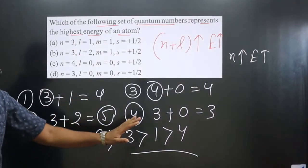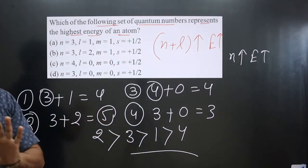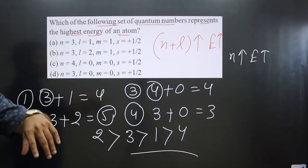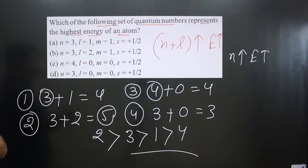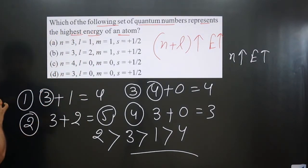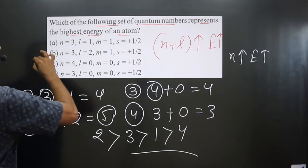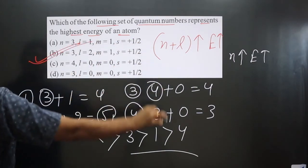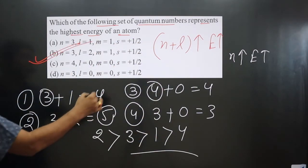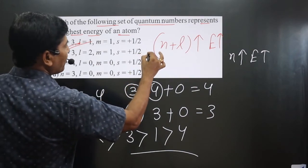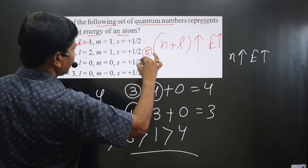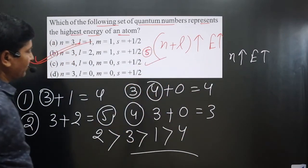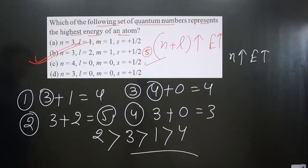Based on these values, we have arranged this order. The question asks which set of quantum numbers has the highest energy. The answer is Option B, because its n plus l value is the highest — that is 5. So the second option is correct.